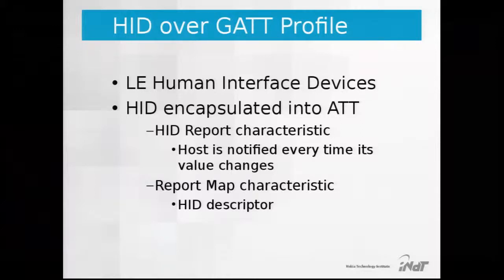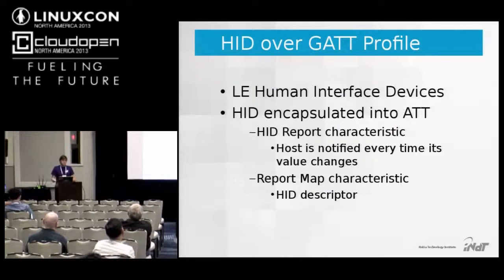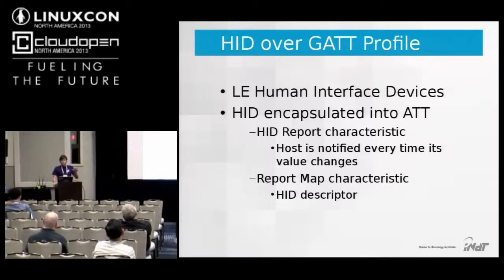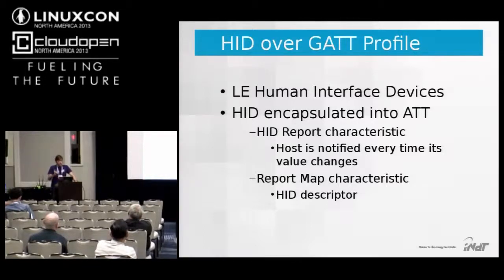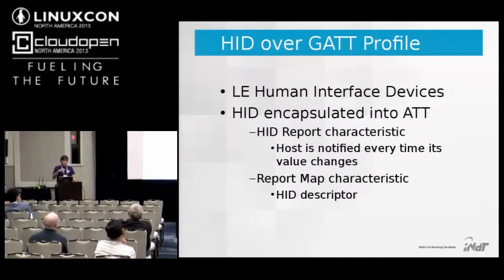There is also a profile for encapsulating the HID protocol inside GATT attributes, used for human interface devices with low energy consumption. There is a characteristic for the HID report; every time a new report is sent, the characteristic value changes, a notification is sent to the host, and the host reads the characteristic. A descriptor called the report map stores the HID descriptor, so you can obtain this information via GATT and inject it into your regular HID subsystem.